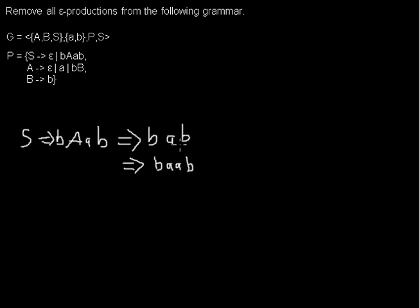So what we do is, for this first case where the A goes to epsilon, we can do the same as in the last video. We just skip this step and say that S can derive in one step to BAB.